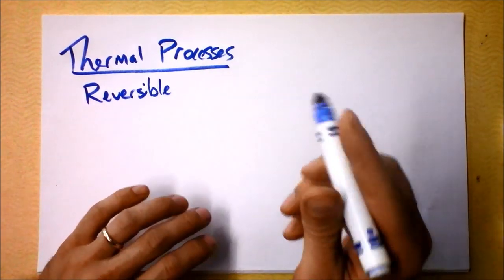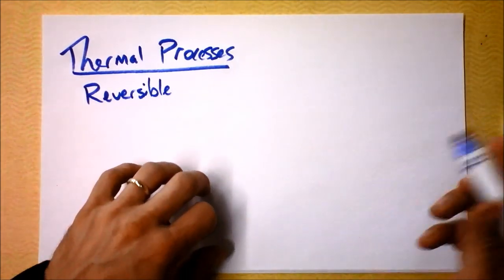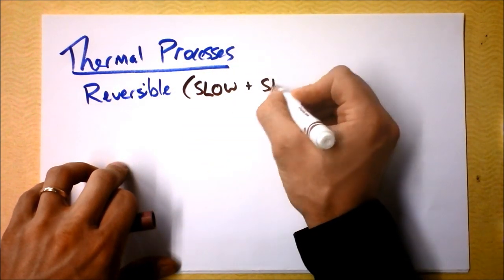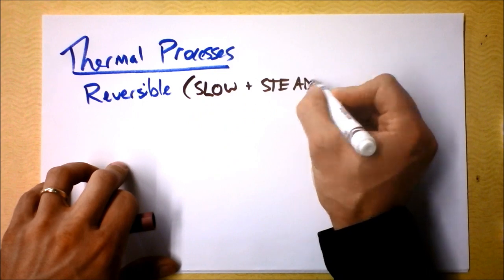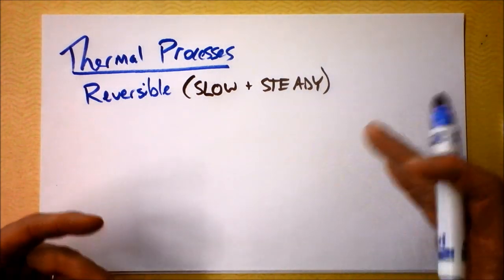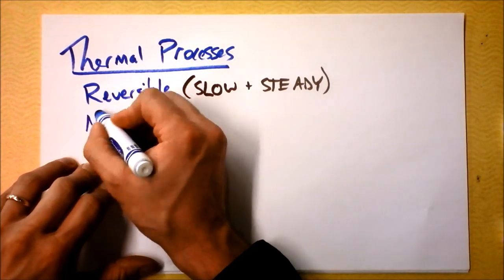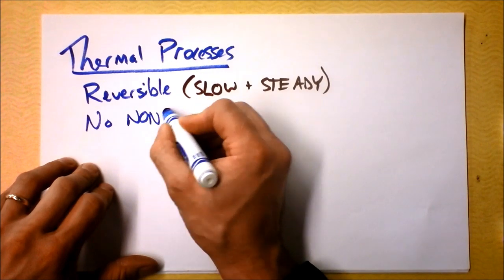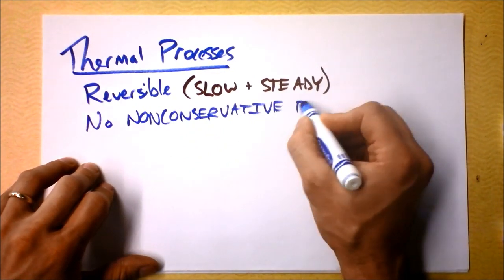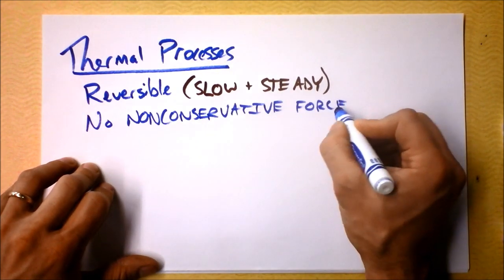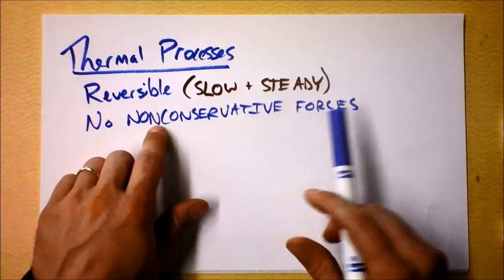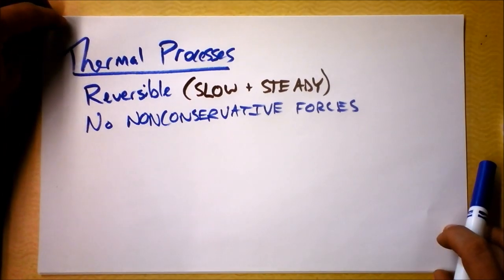Each of our thermal processes will be a reversible process, and that typically means it's happening so slowly that you could go backwards at any point. That's what it means to be reversible. Also, that means that there can't be any non-conservative forces. For ideal gases, we're not allowing viscosity — a non-conservative force would be friction inside the gas, and that's what viscosity is.